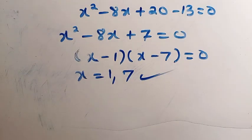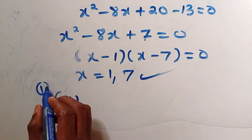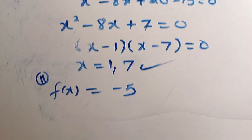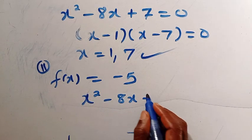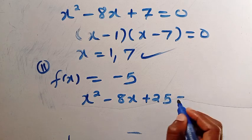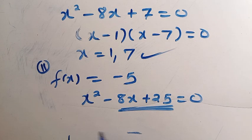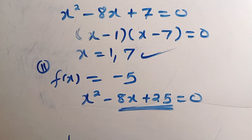For Case 2, if f of x equals minus 5: x squared minus 8x plus 25 equals 0. This leads to a complex root, and since x is a member of the real numbers, we don't need to solve this. So the final answer is x equals 1 and x equals 7. Thanks for watching and see you in the next video — don't forget to subscribe.